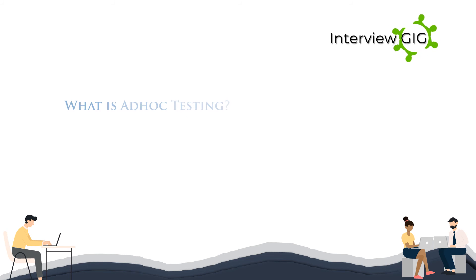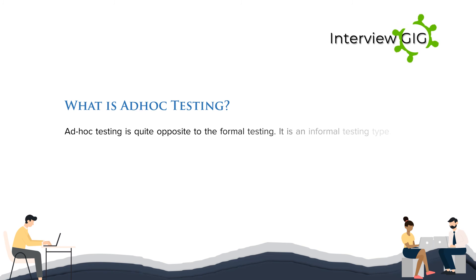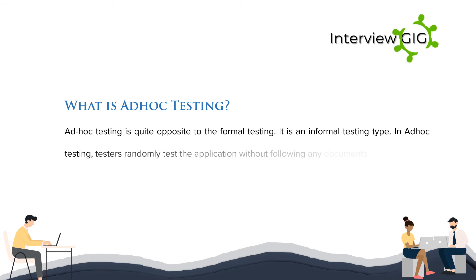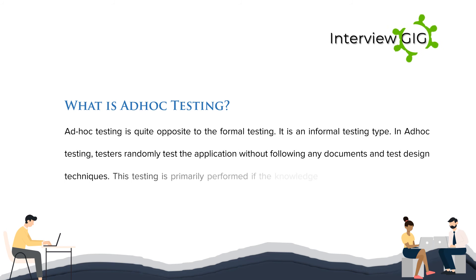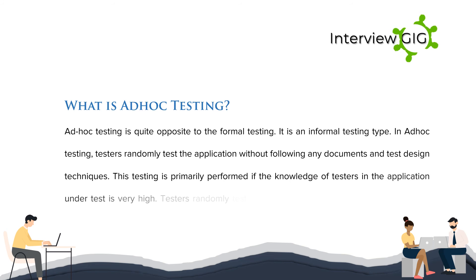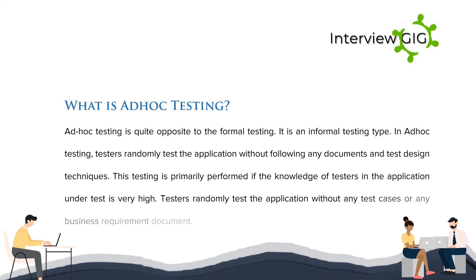What is ad hoc testing? Ad hoc testing is quite opposite to formal testing — it is an informal testing type. In ad hoc testing, testers randomly test the application without following any documents or test design techniques. This testing is primarily performed when the knowledge of testers about the application under test is very high, and testers test without any test cases or business requirement document.